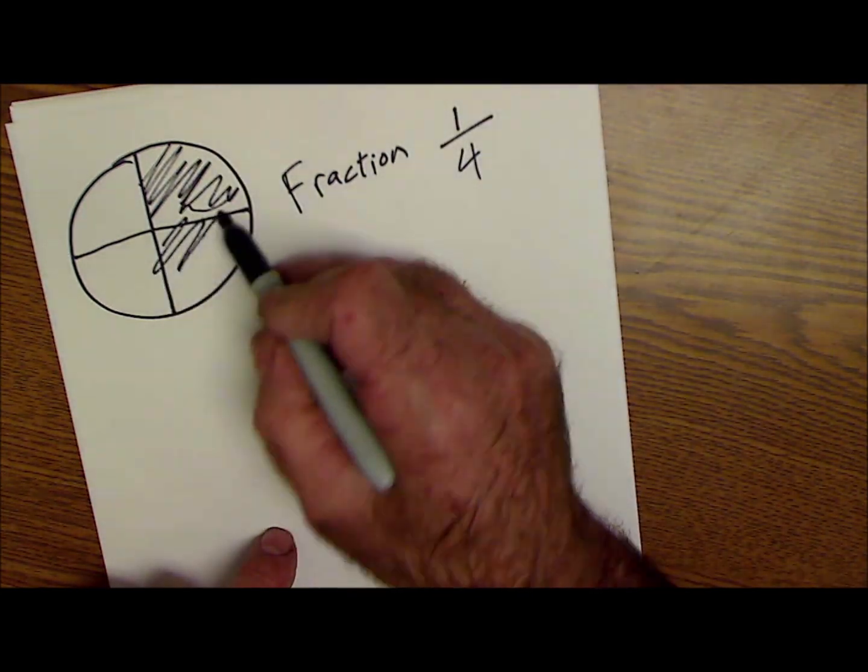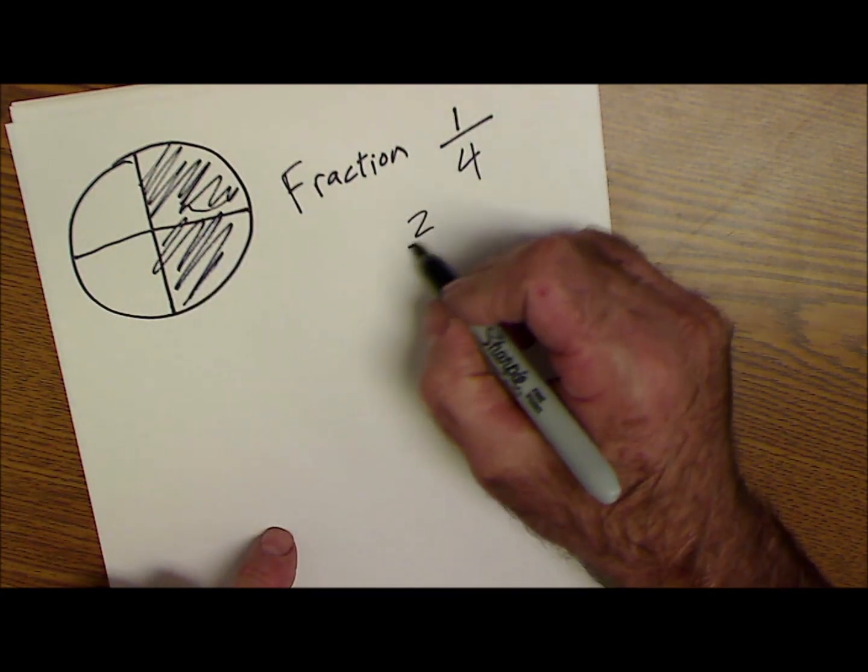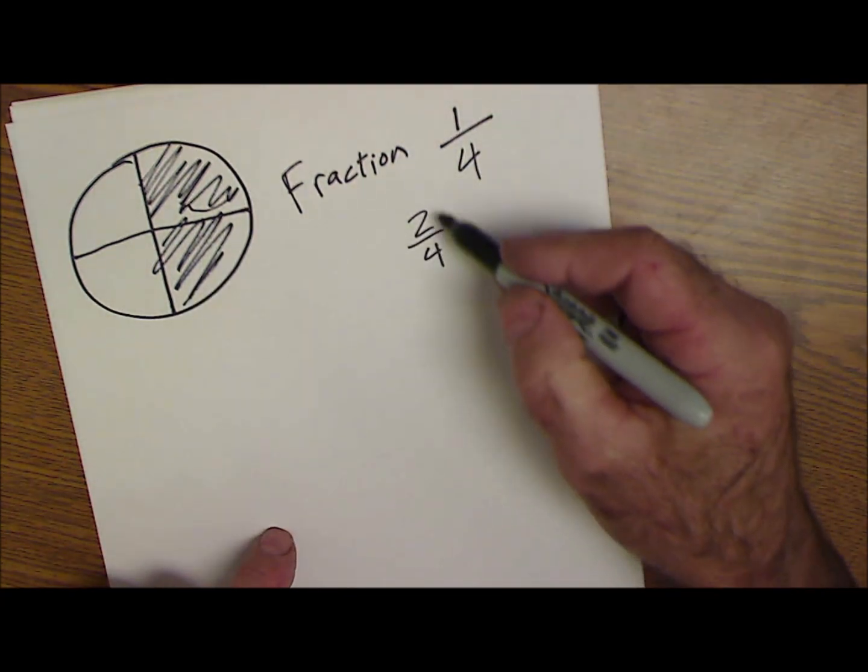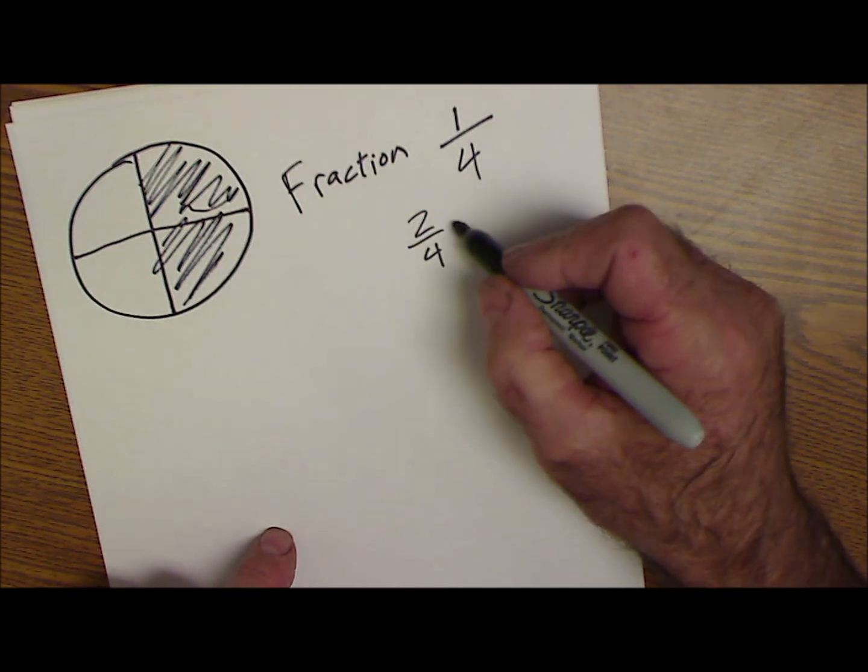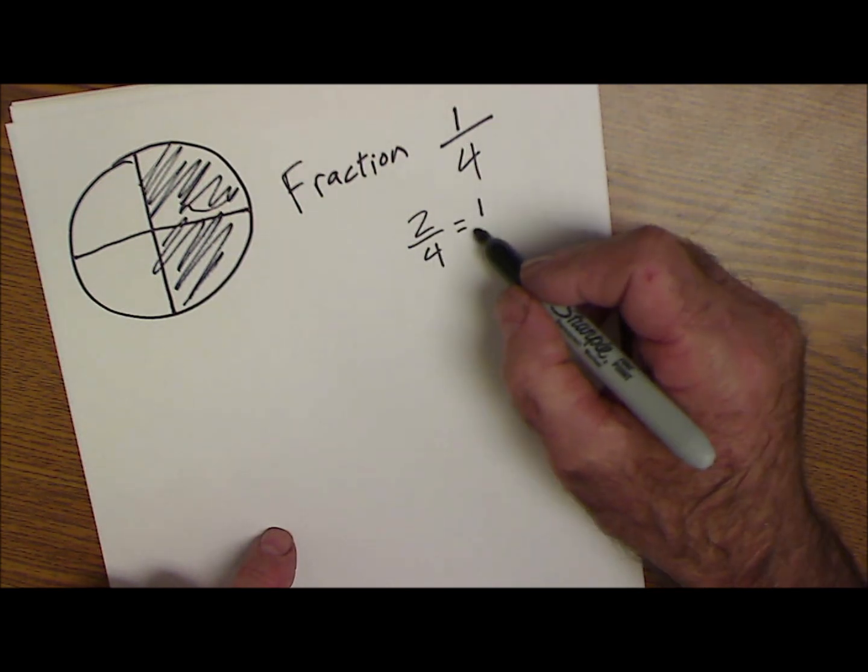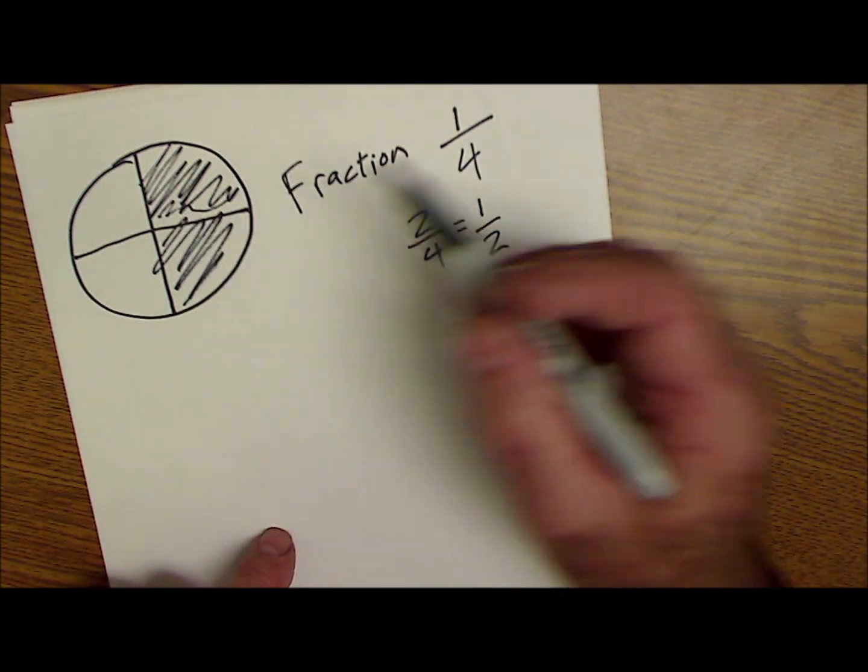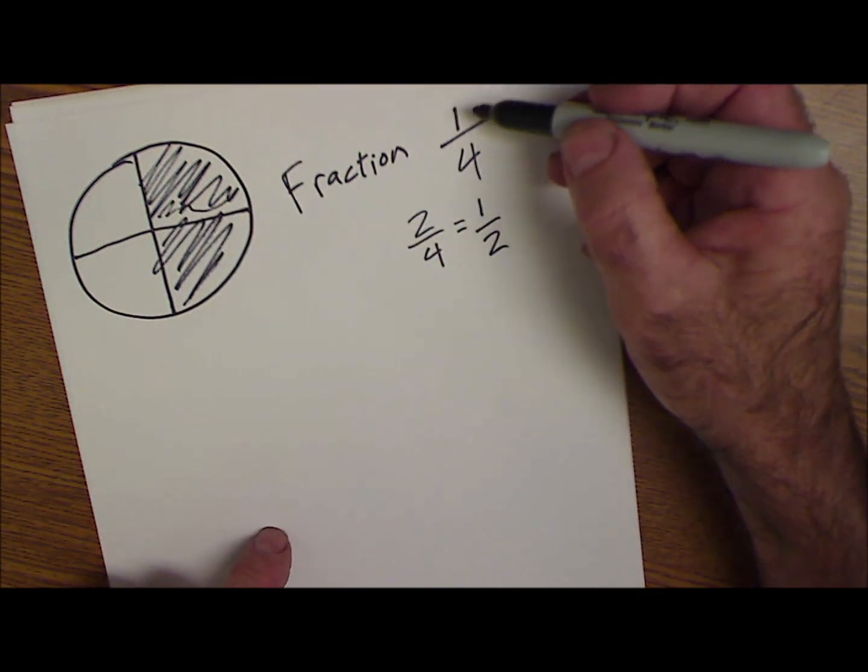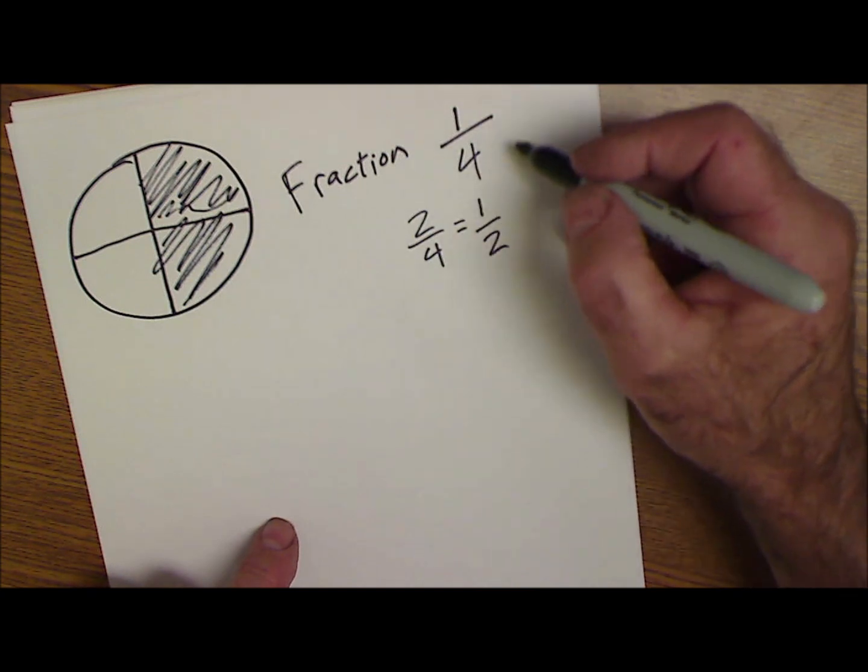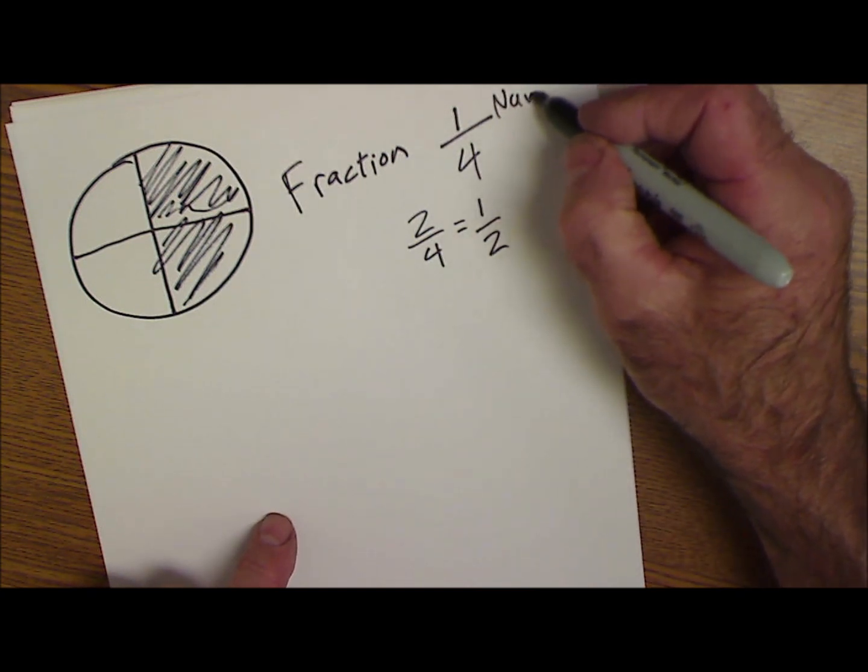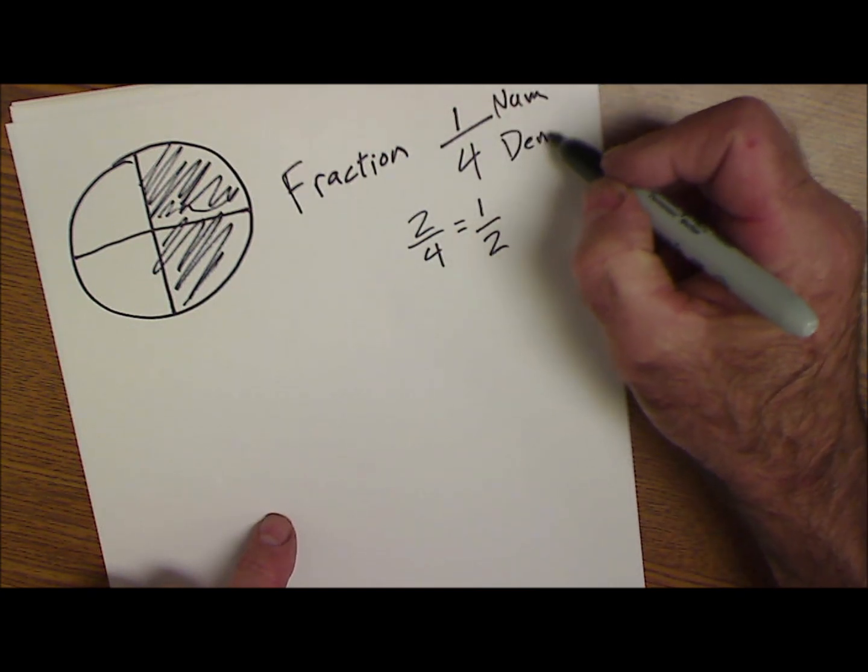If I have two of the four, it's two-fourths, and whenever they're even like that you can reduce them. Two will go in here one time, and two will go in here two times, so that gives me one-half. So that's all a fraction is. It's also a ratio. The top number is called the numerator, and the bottom number is called the denominator.